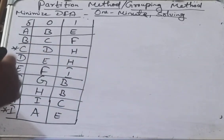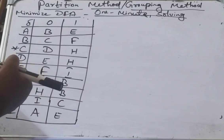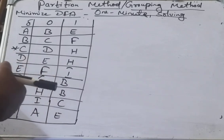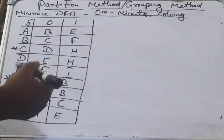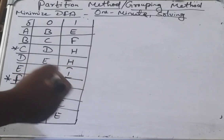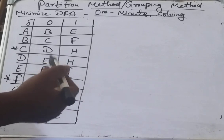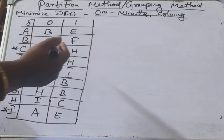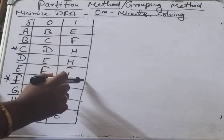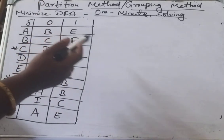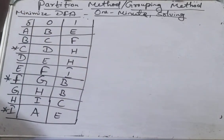You can cross verify whether your answer is correct or wrong — what you have solved using the table filling algorithm for 10 to 12 minutes. Instead of that, if you want to cross verify, you can use this partition method or grouping method. This is the method we follow for solving gate questions, and it will be more helpful for VTO students aiming to clear this subject. This is just a one-minute solving problem.